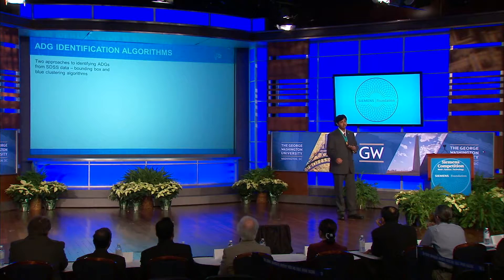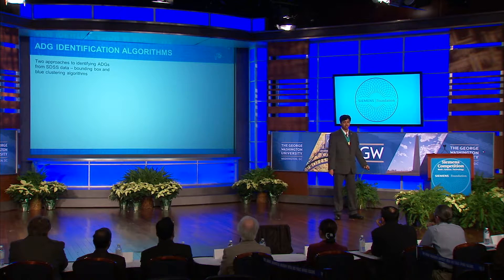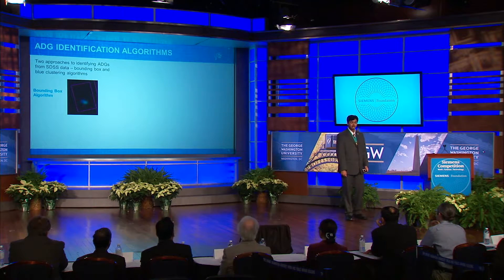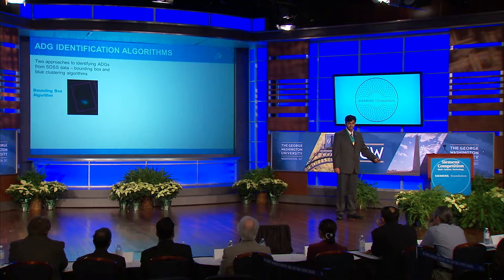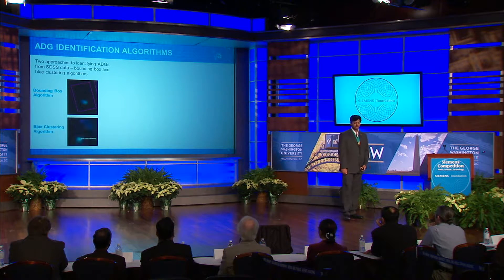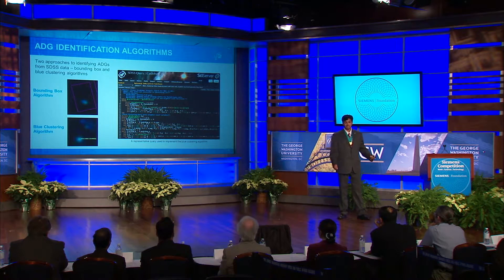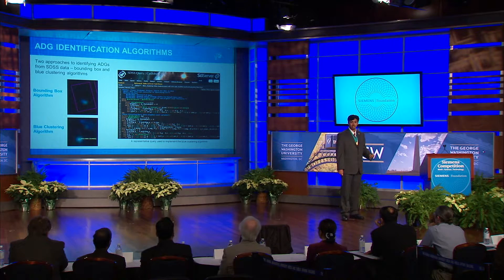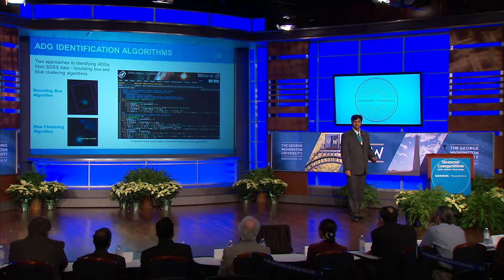ADGs generally fall into two classes: those that are more compact, and those that are more extended. To identify the more compact ADGs, I developed the bounding box algorithm, and to identify the more extended ADGs, I developed the blue clustering algorithm. The data extraction and processing for both algorithms was done using the SDSS catalog archive server and the CasJobs SQL interface, while the data analysis and visualization was done using Python.